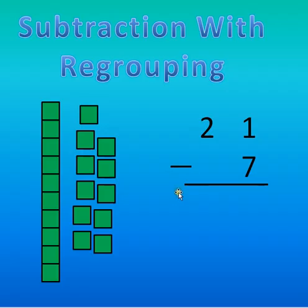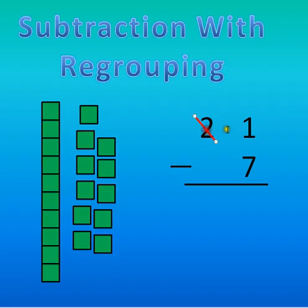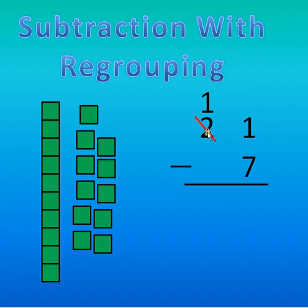I'm not done though, because I have to do some work with this subtraction problem. I don't have two groups of 10 anymore — I moved one out and over, so I only have one left. When you're doing it, you have to realize that since I moved one over, I have one less than what I started with. I started with 2, and one less than 2 is 1. We can prove it by our picture: there is one base 10 block, one group of 10 there.